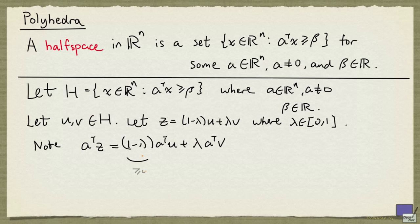Because lambda is at most 1, this is non-negative, and this is also non-negative. A transpose U we know is at least beta because U is an element of H. A transpose V is also at least beta because V is an element of H.